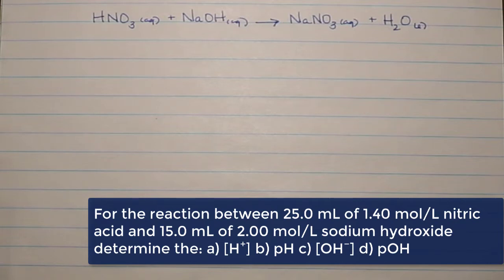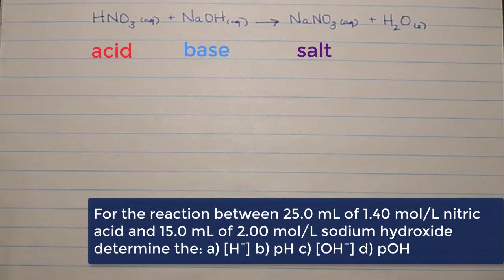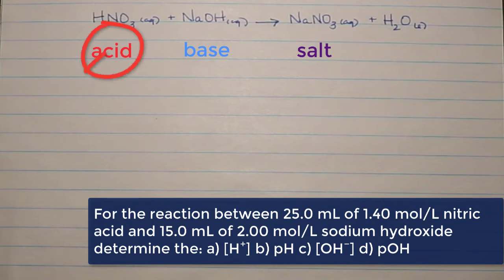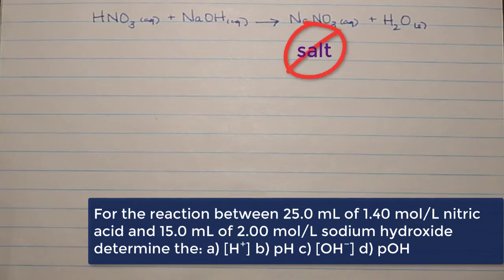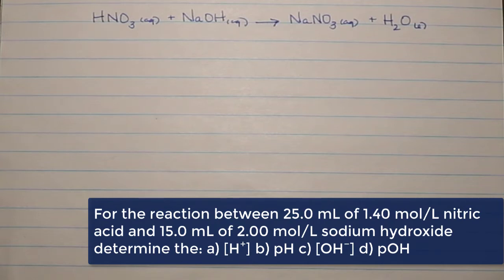Looking at the balanced chemical equation, we have a familiar setup: an acid and a base forming a salt and water. We would predict the pH to be 7 for a true neutralization reaction, assuming both the acid and base are completely used up. If they are, only salt and water remain, and water has a pH of 7. The salt produced from a strong acid and strong base is neutral — it won't affect the pH — so the pH would be 7. But that's only true if both the acid and base have completely reacted.